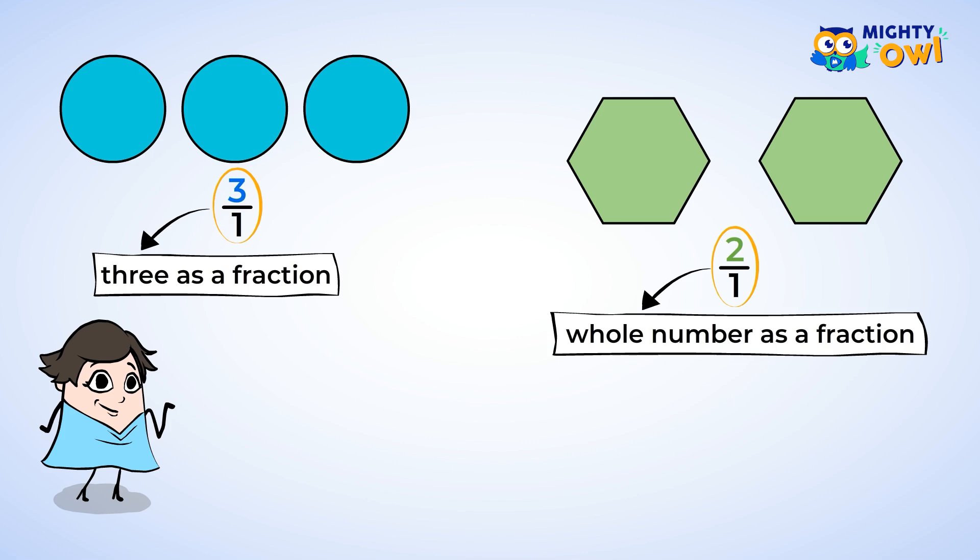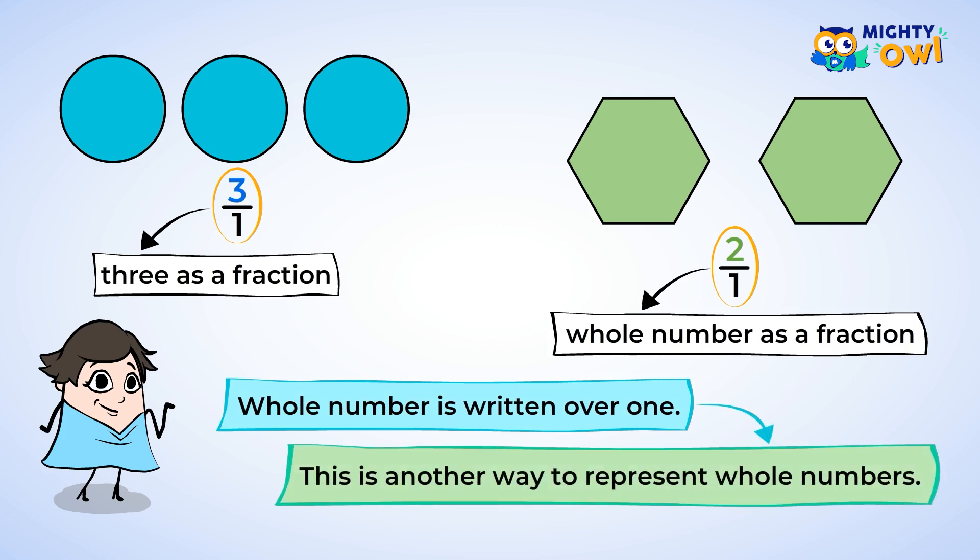Notice that with both of these examples, the whole, or regular number, is written over one. This is another way we can represent whole numbers. Whole numbers do not have any fractional parts.